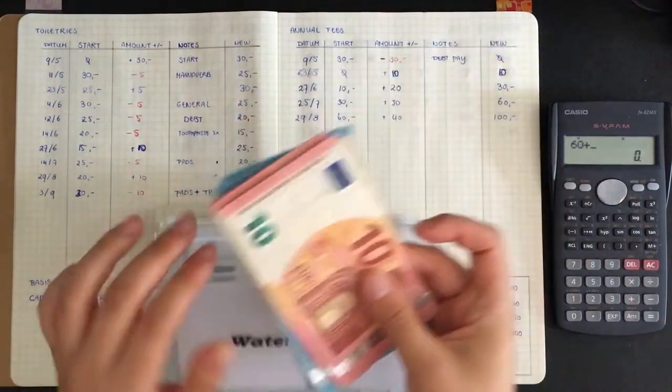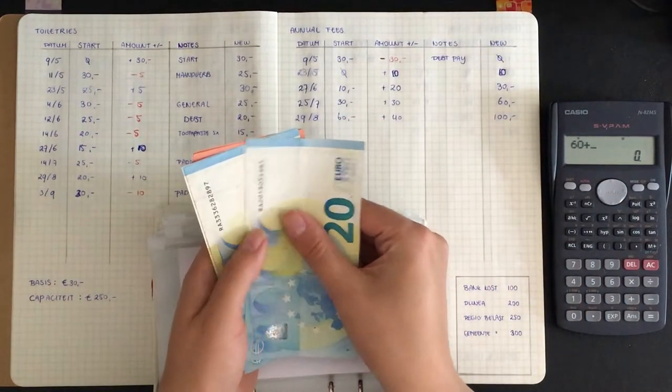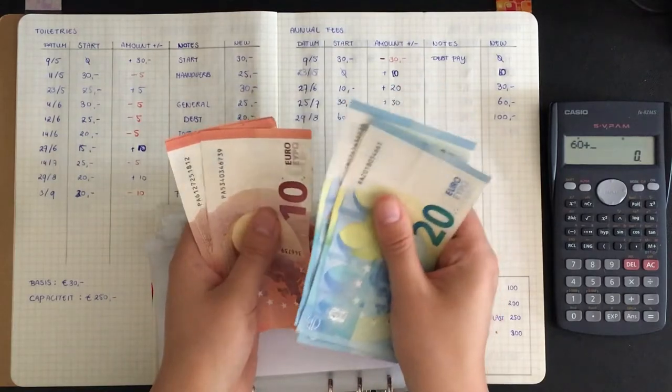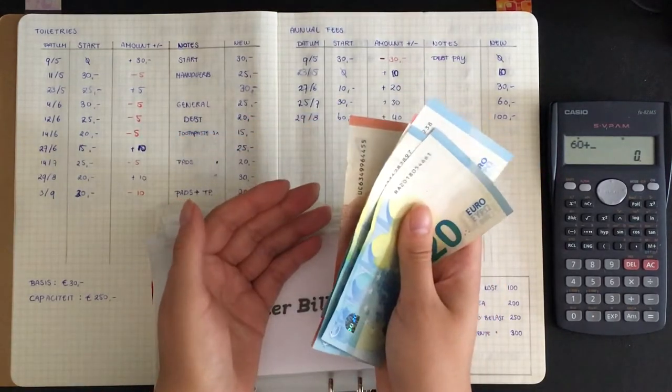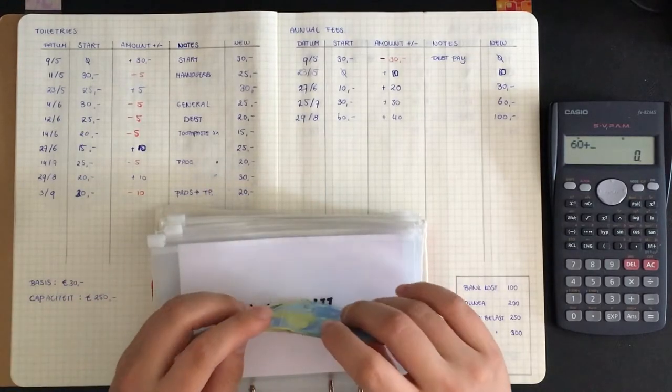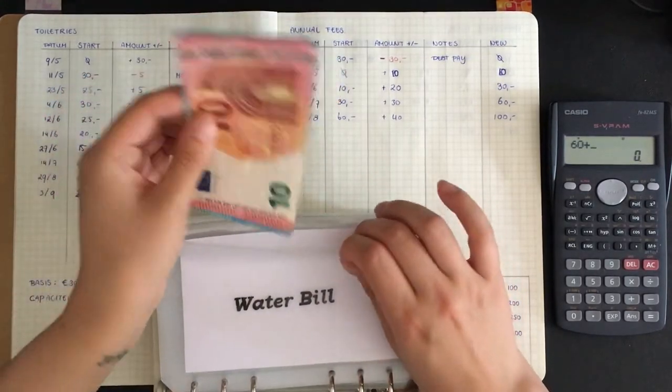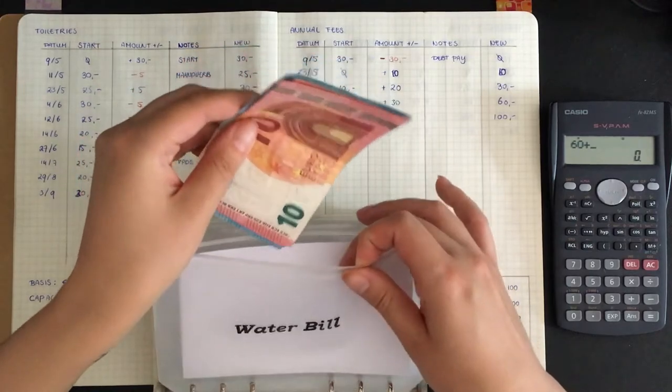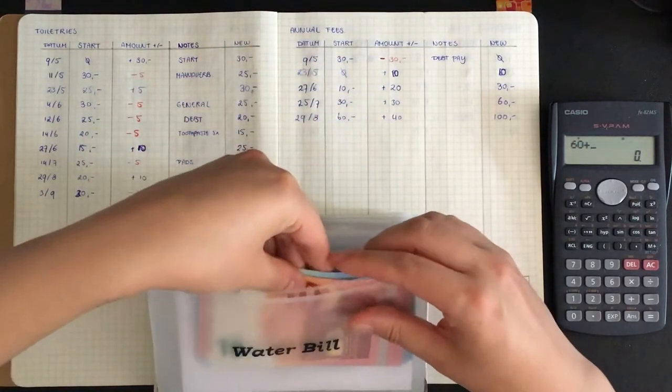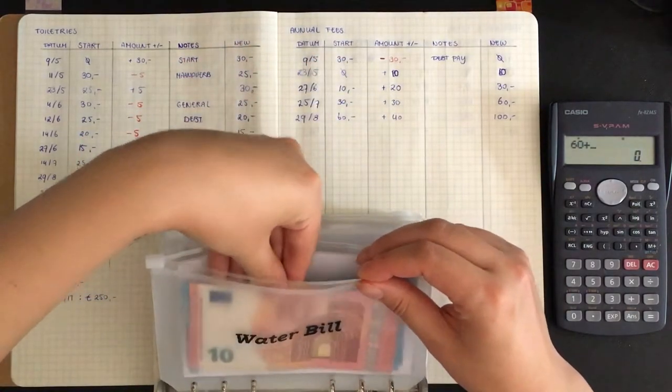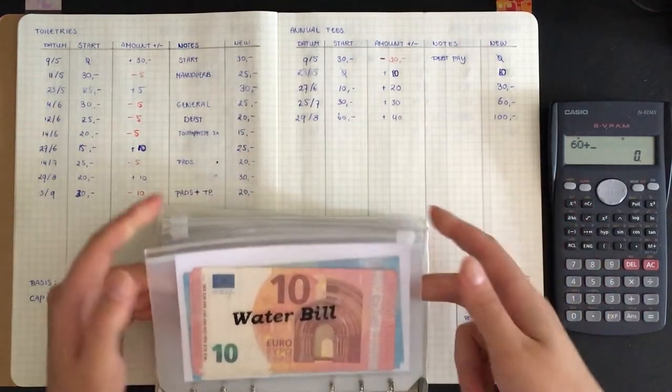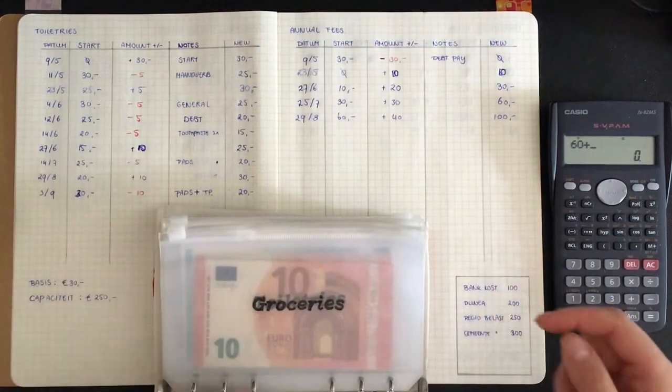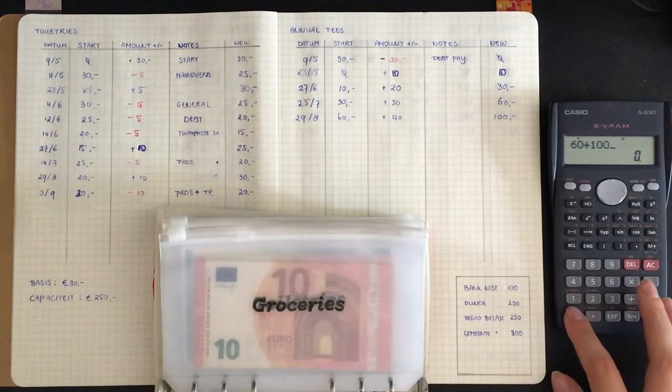So we have 60 and then we have my water bill which is annual fees and it should have 100 euros. So let's count how much there is in here. There's 20, 40, 60, 70, 80, 90, 100. Which also means that I should put this in the bank but I will wait for a little bit and see what I will do in my next cash stuffing. So that means annual fees has 100.